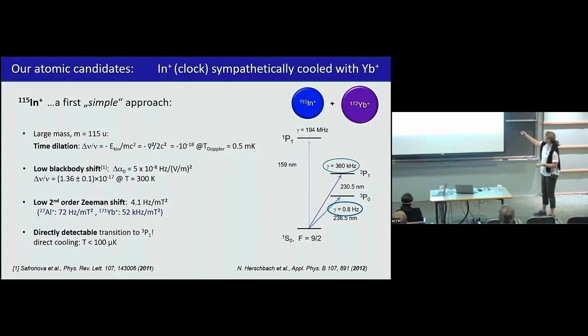That's why we thought for the beginning, for the proof of principle, we will choose indium to make the first multi-ion clock in the world. Later on, we can also switch to ytterbium. Because there, of course, we can push the lifetime. But in the beginning, we thought, indium it is, because of this ridiculously low quadrupole moment and very good features where we don't have to care much.